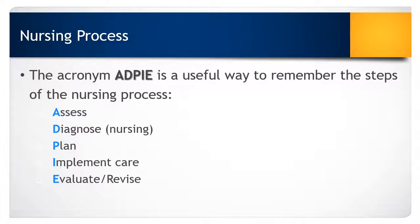The third step is to plan. With the client, you will be identifying outcomes that the client wishes to achieve, then you will look for interventions to help make those outcomes a reality. The fourth step is to implement your plan of care. The fifth step is to evaluate — you are going to evaluate if the outcomes are being met or not met. If they are not being met, then we are going to look for revisions that need to be done in the nursing care plan.